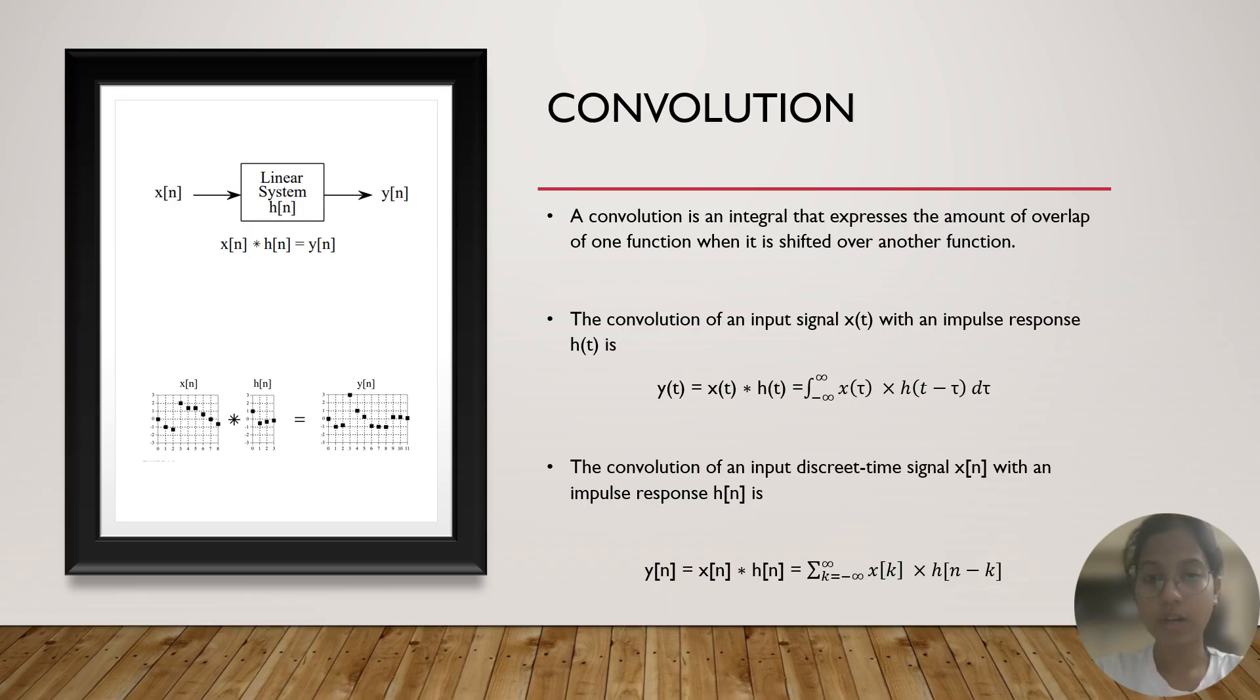When the overlapping takes place, you will find out the area of the overlapping, and you repeat this process from minus infinity to infinity. So, convolution is basically denoted by a star symbol. To have a mathematical expression of convolution, y of t is equal to x of t convolution h of t, which is equal to integral minus infinity to infinity x of tau into h of t minus tau, where tau is a variable.